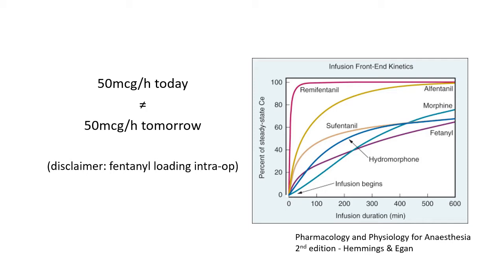For remifentanil, reaching steady state is very quick, but for fentanyl it is a very slow process. In fact, it may take many hours to reach anything like steady state. The right way to manage a patient like this would be to administer a bolus of fentanyl — not necessarily a huge one — followed by an increase in the rate of infusion, just like a TCI machine would do.